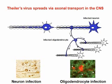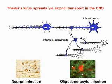Theiler's virus can also spread from axon to myelin sheaths, resulting in infection of oligodendrocytes, the myelin forming cell. These are examples of Theiler's virus infection in neurons and oligodendrocytes, visualized by immunostaining against viral antigen.